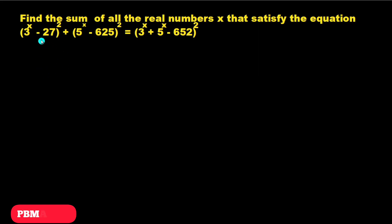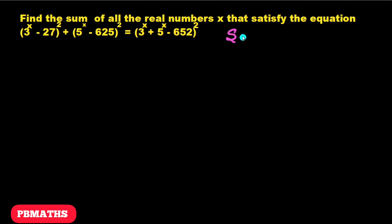Hello everyone. Welcome to PV Maths. Find the sum of all the real numbers x that satisfy the equation: (3^x − 27)² + (5^x − 625)² = (3^x + 5^x − 652)². This question is from Singapore Maths Olympiad 2005.